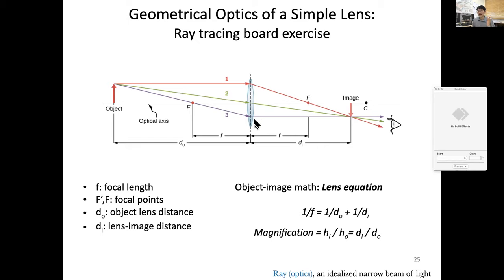So if the object is there, you have a lens, the most important thing is you mark the focus. The role of focus is if the rays are parallel to the optical axis like this, it must go through the focus. So the rays, so the rays of this red goes like this.